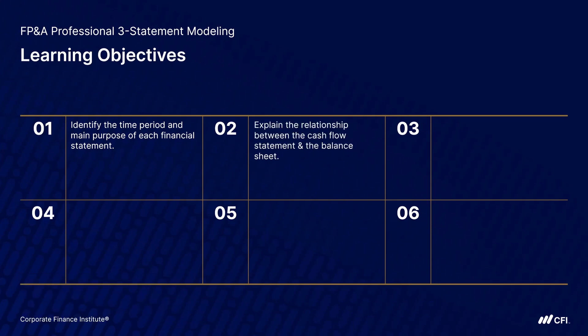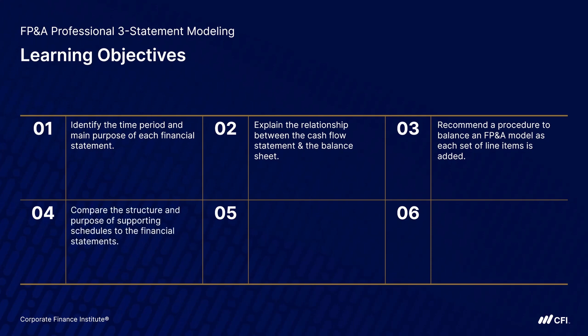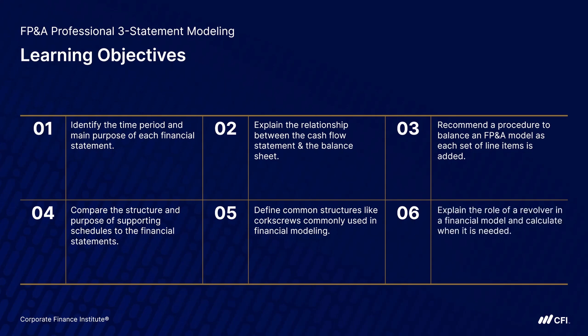There's a very important relationship between the cash flow statement and the balance sheet — we need to be able to explain and understand it. We're going to recommend a procedure to balance even the most complex FP&A models, bringing the model back to balance as each set of line items gets added. We'll also discuss the structure and purpose of supporting schedules and financial statements, common structures like corkscrews, and explain the role of a revolver or line of credit and calculate exactly when it is needed.